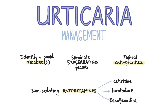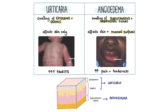Where possible the trigger must be identified and avoided. Non-specific aggravating factors should be eliminated as well, like overheating, stress, alcohol and caffeine. Topical agents such as calamine lotion or topical menthol 1% in aqueous cream may help ease pruritic symptoms. Non-sedating antihistamines can also be given like cetirizine, loratadine and fexofenadine. Urticaria can be confused with angioedema, but they're very different. Urticaria is swelling of the epidermis and dermis while angioedema is swelling of the subcutaneous and submucosal tissues. Urticaria is less severe and usually itchy, whereas angioedema is associated with pain and tenderness rather than pruritus.